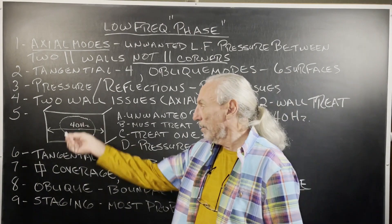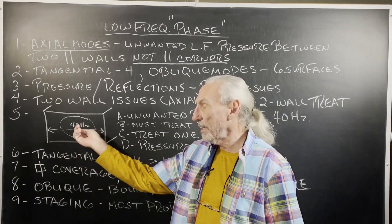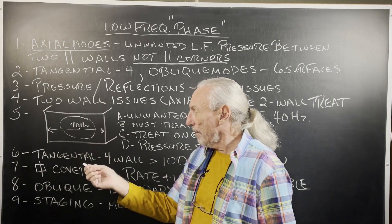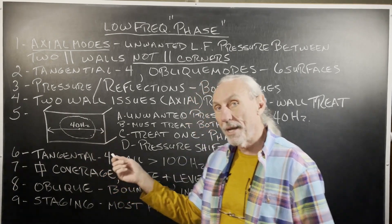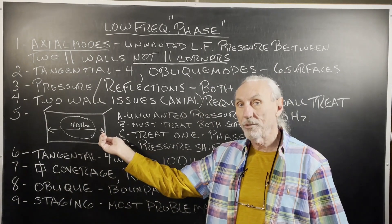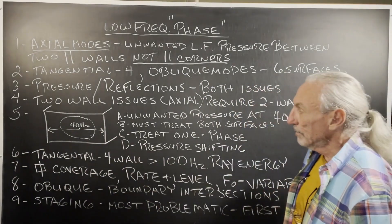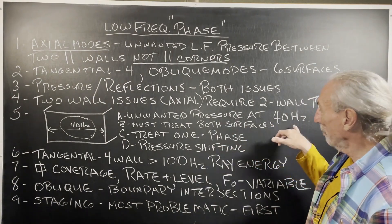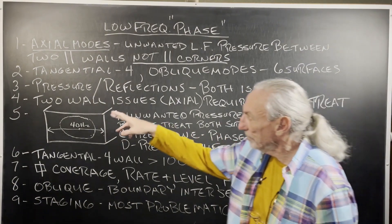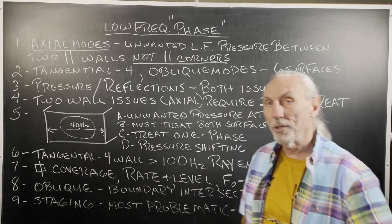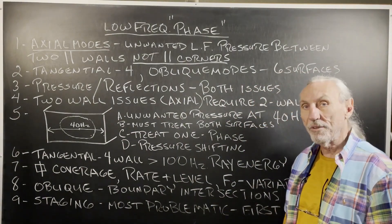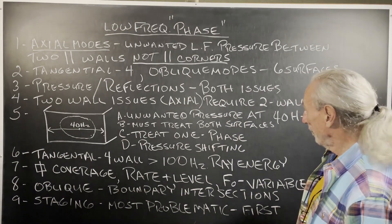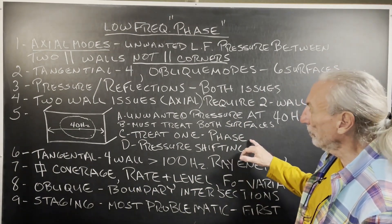The axial modes require two-wall treatment. Let's take a room with a width — we've got a 40-cycle problem between two walls. If we didn't have the second wall, we wouldn't have the problem. That's why a lot of times in your setup, if you have an open rear wall, that's a good thing, especially in theaters. Unwanted pressure at 40 hertz — you must treat both surface areas, especially with 40 hertz energy. At almost 30 feet long, it's not going to have room.